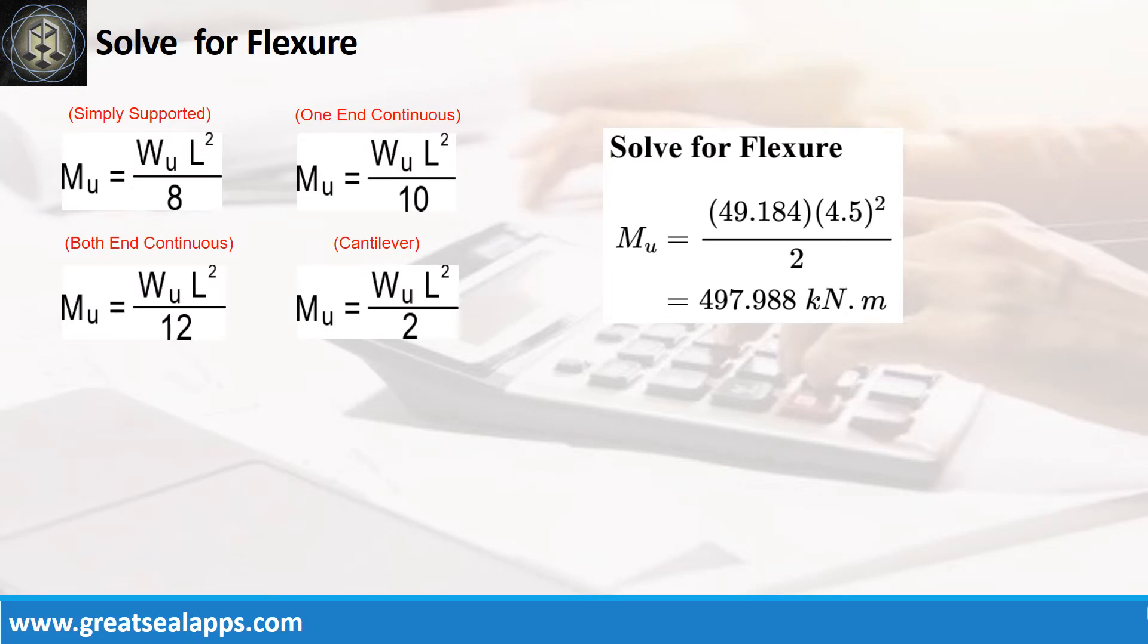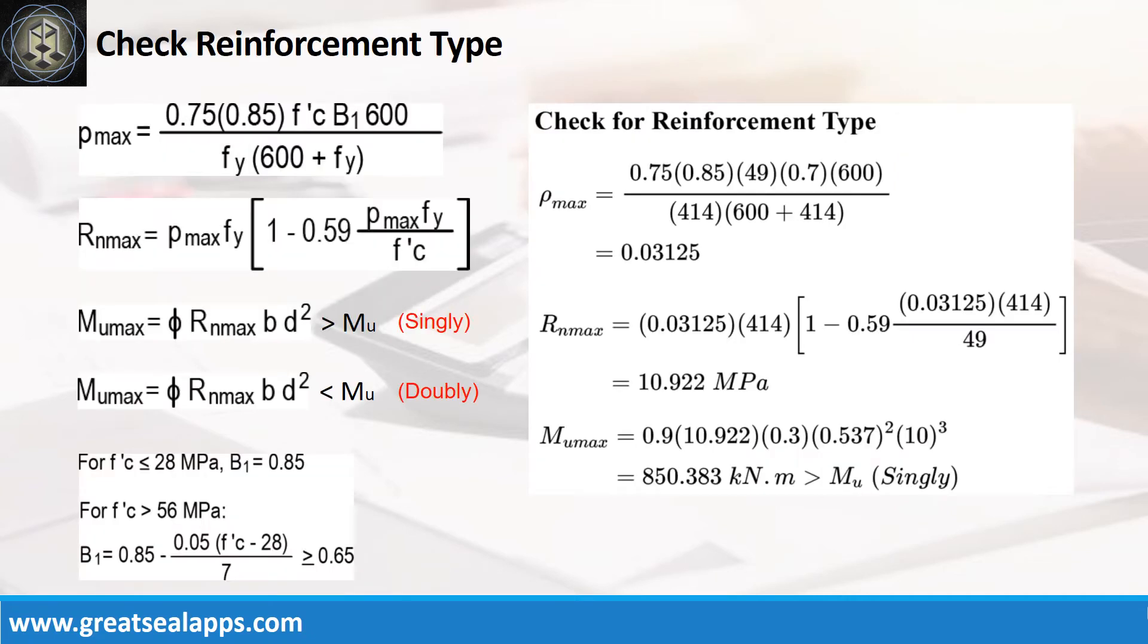Given factored load equals 49.184 kN/m and L equals 4.5 m, the maximum moment is 497.988 kN·m. The ρ_max from given design criteria is 0.03125, then R_N max is 10.922 MPa, and finally the M_U max is 850.383 kN·m, greater than 497.988 kN·m for singly reinforced beam design.